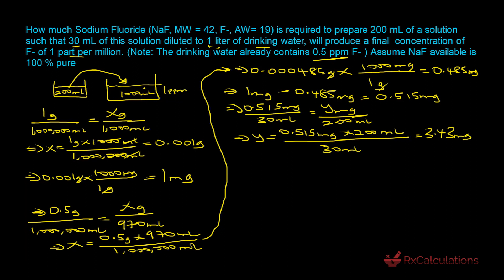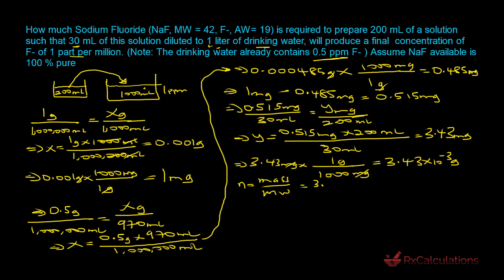Converting 3.43 mg to grams: 3.43 mg ÷ 1000 = 3.43 × 10⁻³ grams. Moles of fluoride = mass ÷ atomic weight = 3.43 × 10⁻³ g ÷ 19 g/mol = 1.81 × 10⁻⁴ moles. Sodium fluoride dissociates into sodium cation and fluoride anion in aqueous solution, giving a 1:1 molar ratio between sodium fluoride and fluoride ion.